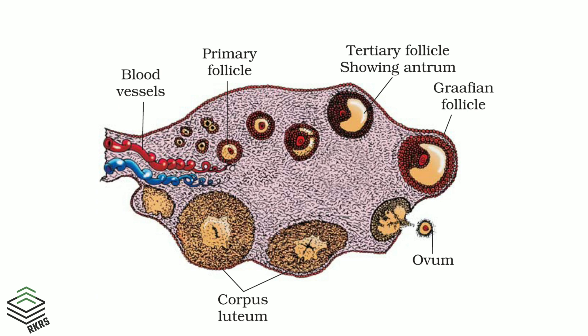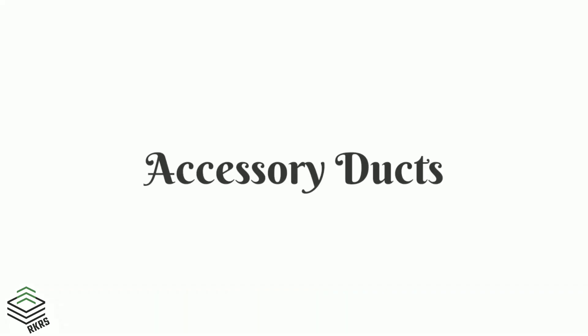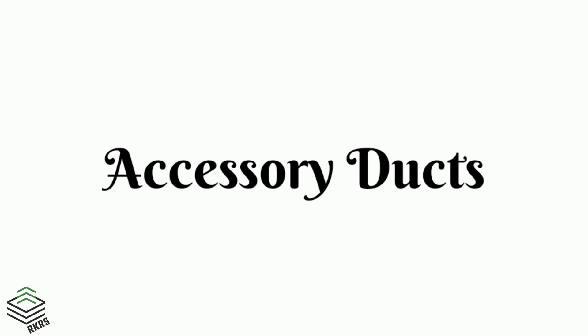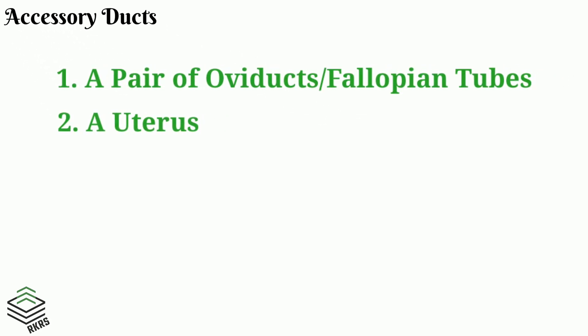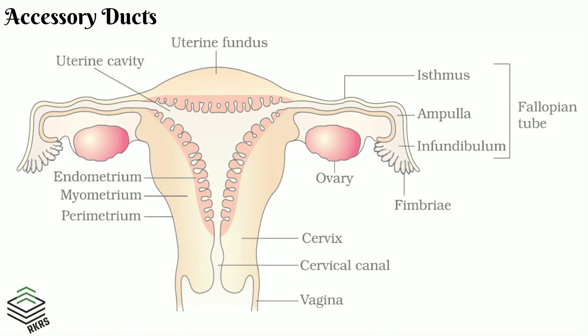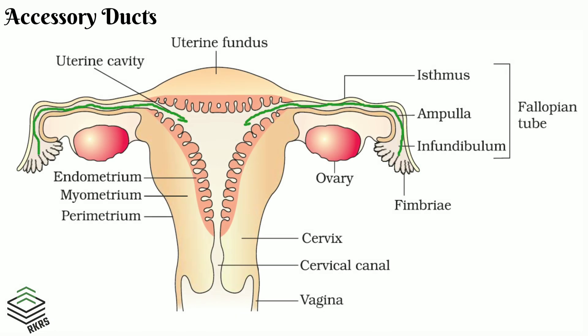The accessory ducts include two oviducts, a uterus, and a vagina. The oviducts are also called fallopian tubes.